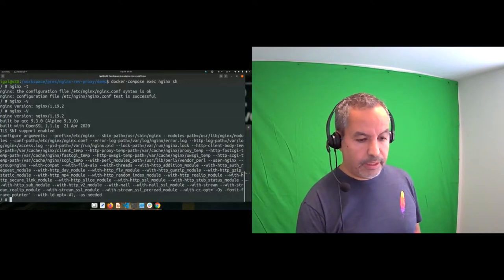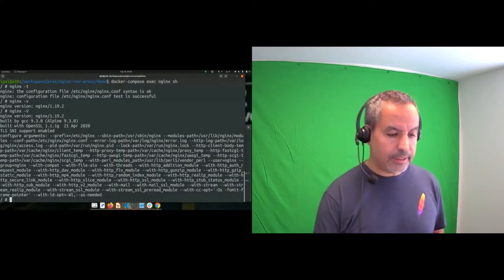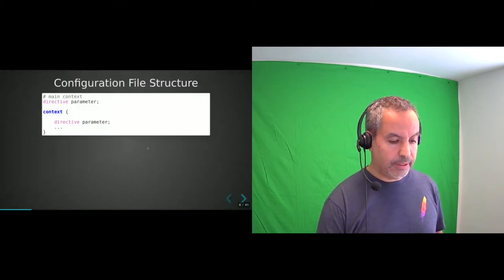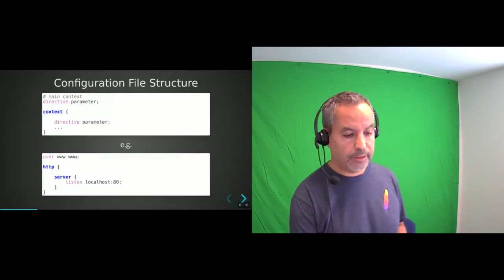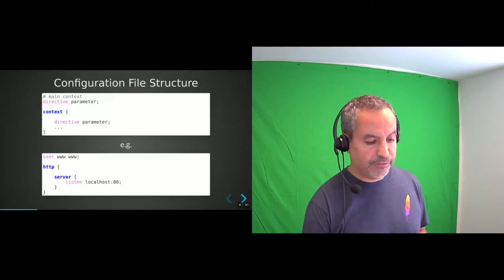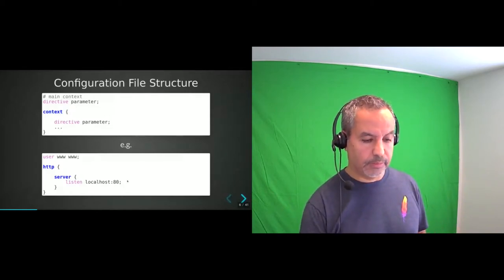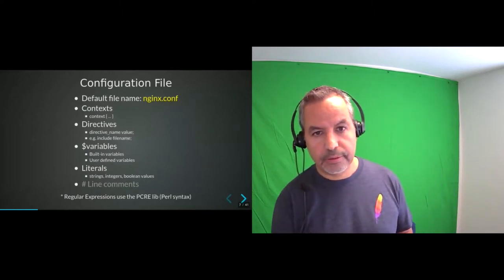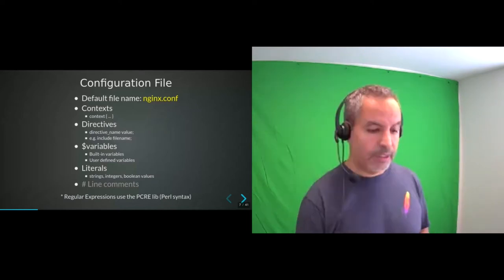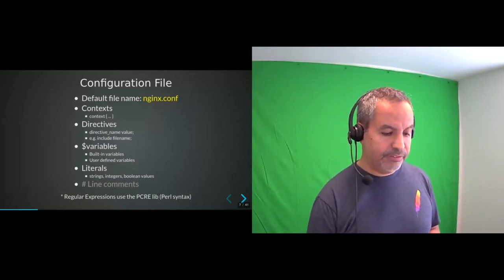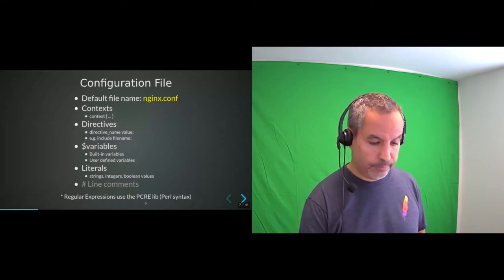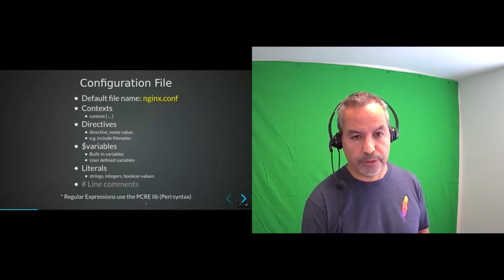Configuration file structure — in general there are contexts and directives. The main context is implicit, so anything outside of a context belongs to the main context. Inside a context you have directives and parameters. For example, you can set the user account under which nginx will run: `user www group www`. You can define the http context with server and listen. The default config file name is `nginx.conf`; you can use the `-c` argument to set a different one. The configuration file is made of contexts, directives, variables, literals, and comments. All regular expressions by default use the PCRE library — Perl syntax by default.